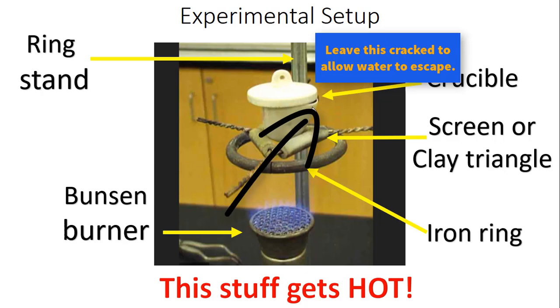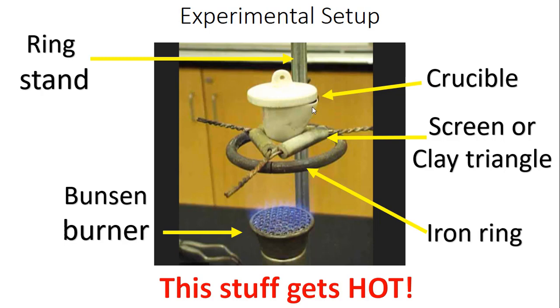That's to allow the water to escape. While you're heating this you don't want to cover the crucible totally because if you do then your water as it evaporates will just go to the top and then drip back down into your sample. You want to leave it cracked so you'll give that water a chance to escape as steam.